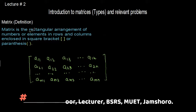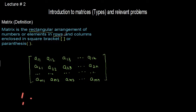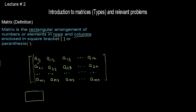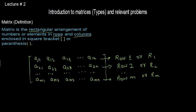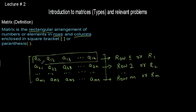Note that it is the rectangular arrangement of elements. Rectangular simply means that when you arrange the elements, you will get a shape of a rectangle. For example, in this matrix we can have a shape of a rectangle. The arrangement of elements in horizontal form are known as rows. Here we have the first row of elements: A11, A12, A13, indicating the first row.